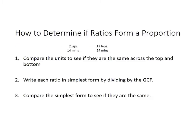How to determine if ratios form a proportion? Well, our examples are 7 laps for every 14 minutes. What that means is that in 14 minutes you could run 7 laps. The other ratio is 12 laps for every 24 minutes. That means in 24 minutes you could run 12 laps. We want to compare them and see if these are the same ratio or if they form a proportion.